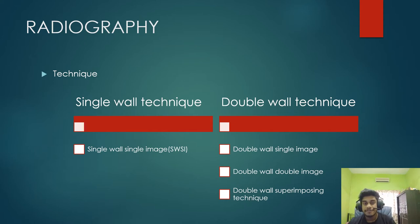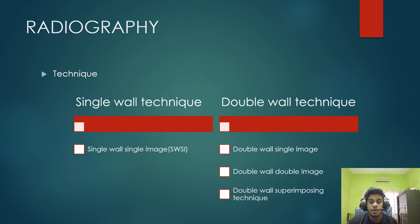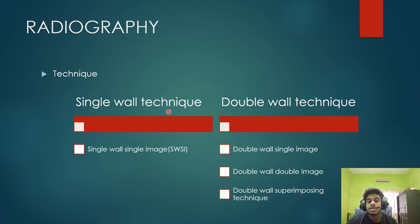Radiography in NDT is known as RT. There are a few techniques under it. One is called the single wall technique, and then there is the double wall technique, and under each there are different techniques. We will look at them right now.